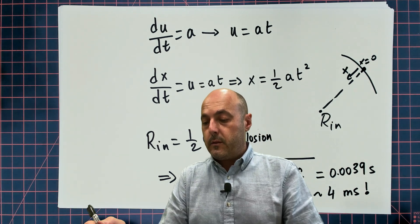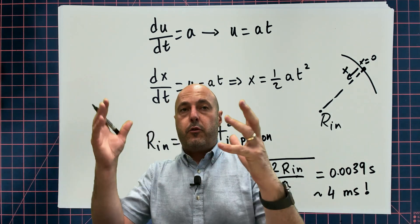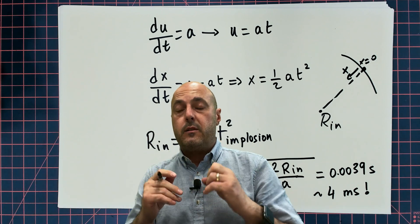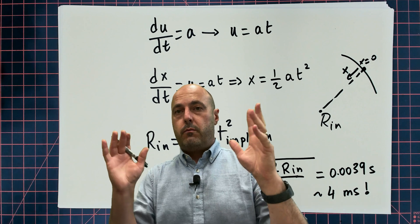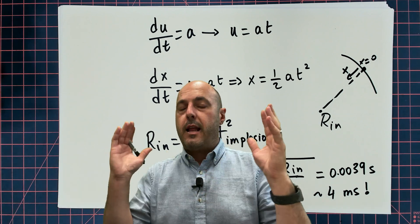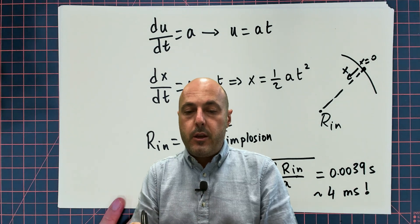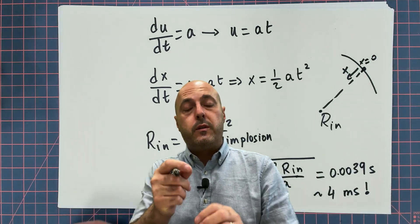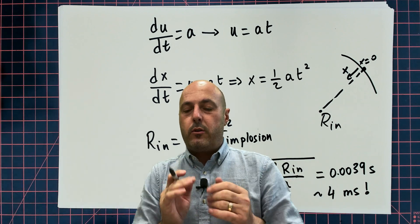4 milliseconds. Now, the eye, for it to register information, the brain takes about 13 milliseconds. So the occupants didn't have a clue what was going on. According to this analysis, the collapse happened so fast, they had no idea what was going on. Now, with this t_implosion, you can also deduce the speed at the centerline of these elements once they all crashed into each other.